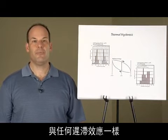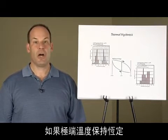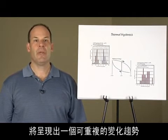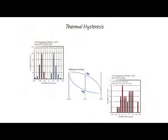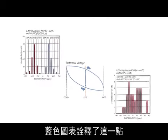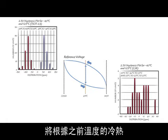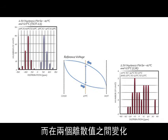As with any hysteretic effect, if the temperature extremes remain constant, the output voltage will follow a repeatable curve versus temperature as the temperature is cycled. This is illustrated by the blue diagram. Note that the output voltage as measured at room temperature will vary between two discrete values depending on whether the previous temperature was cold or hot.